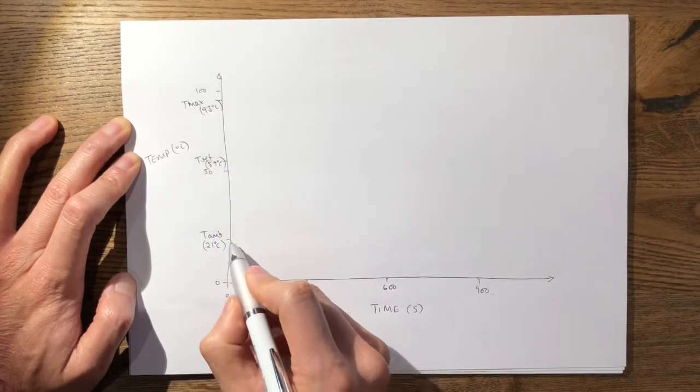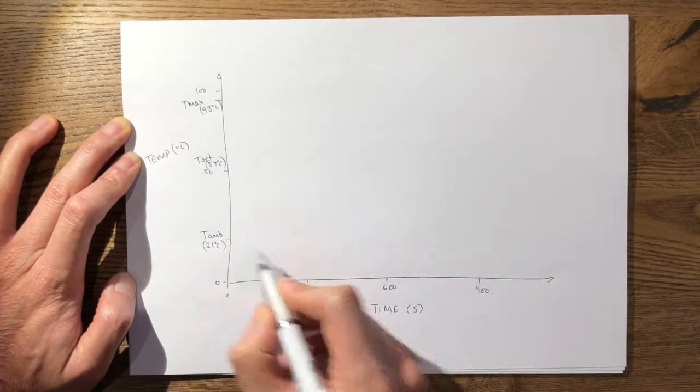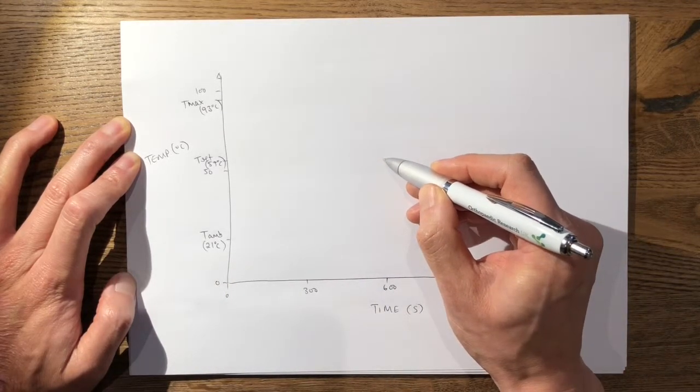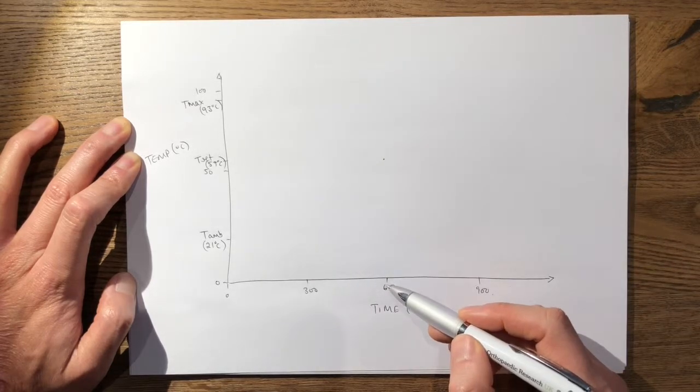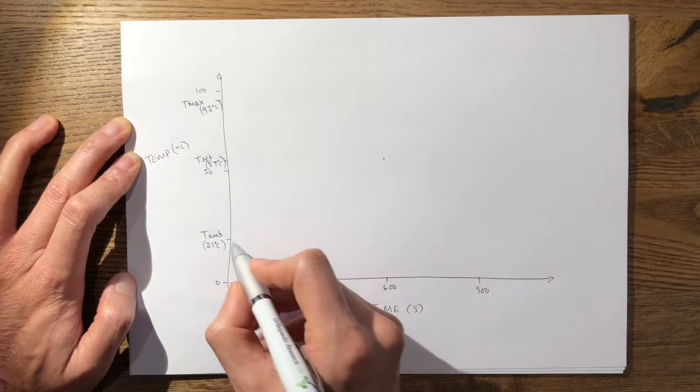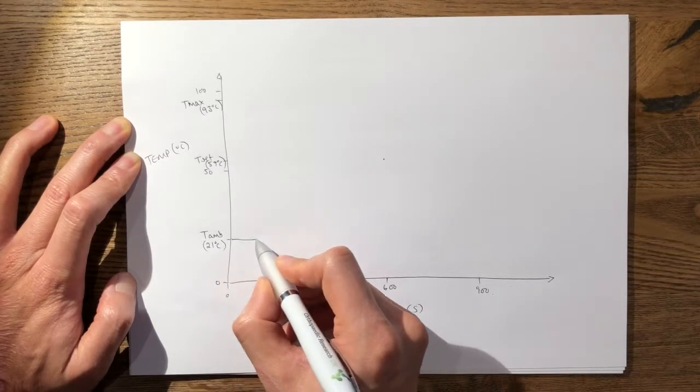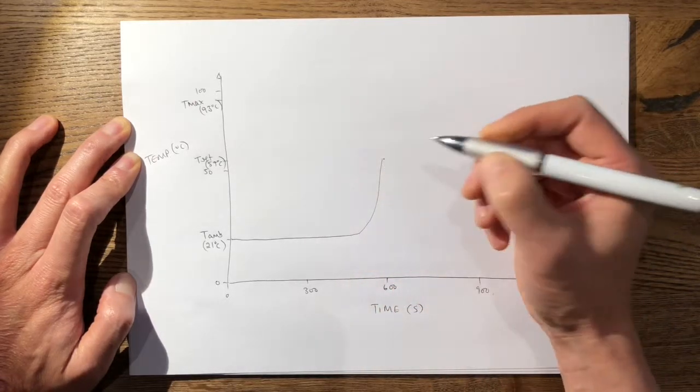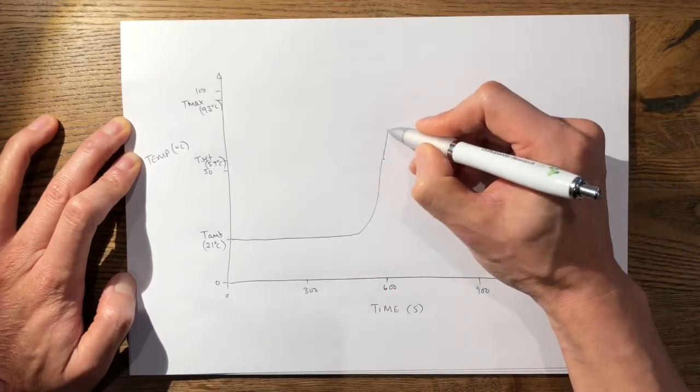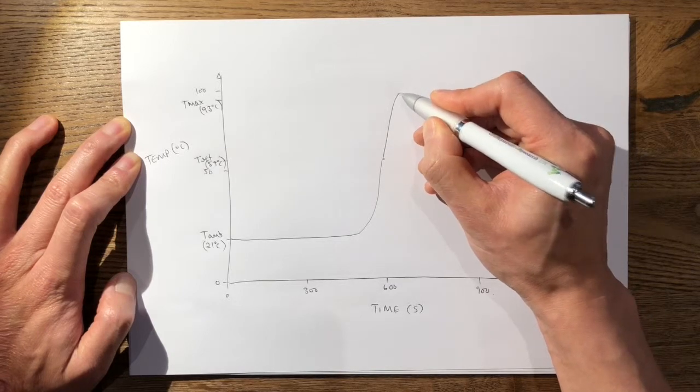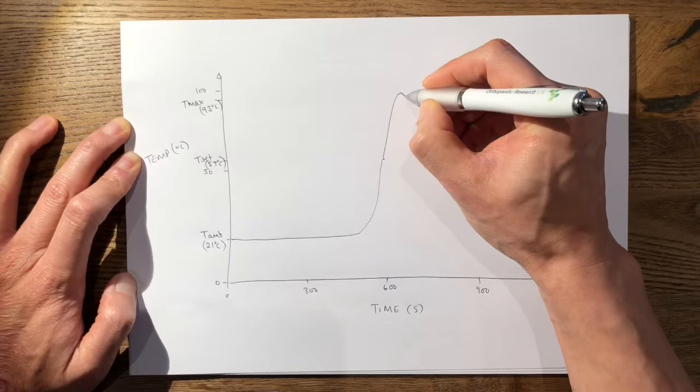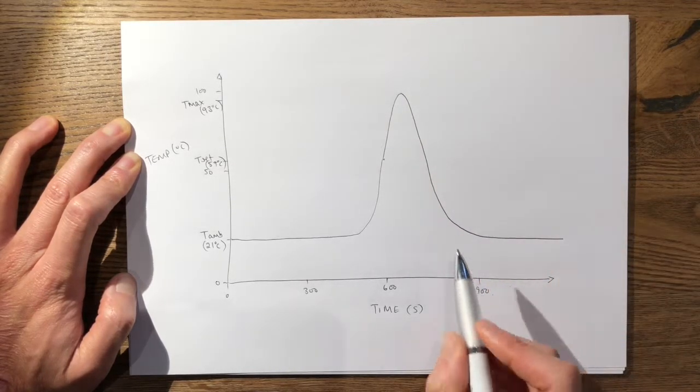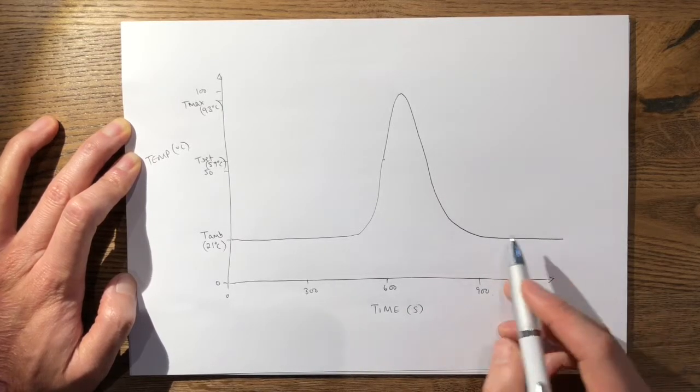From here you can start to populate your graph. You know that your cement will start to set at approximately 57 degrees here, and you know that it will start to set at around 10 or 11 minutes. It'll start off with an ambient temperature and then it'll quite rapidly rise all the way to the set point, and then it'll continue to rise to its maximal temperature at 93 degrees. Then over the course of time it will gradually stabilize again back to the ambient temperature, and it will continue to harden and cure and reach its maximal strength at 24 hours.